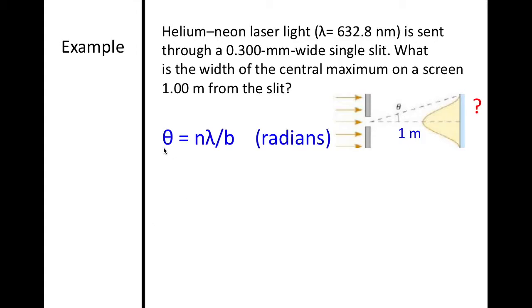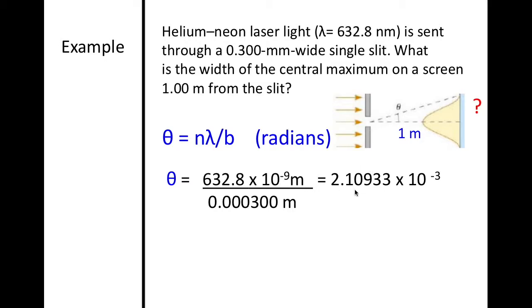So what we have is we have this equation for single slit diffraction. When I plug everything in and I changed all of my values here to be in meters, I got an answer of 2.10933 times 10 to the negative 3. If I take into account significant figures, 2.11 times 10 to the negative 3, and that is for this angle here.